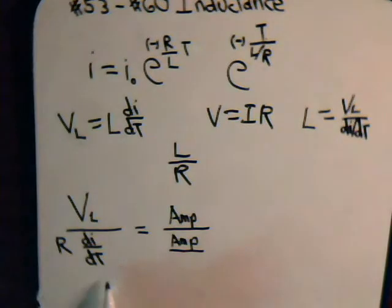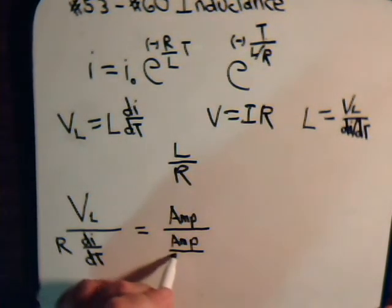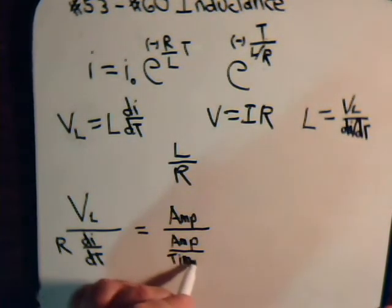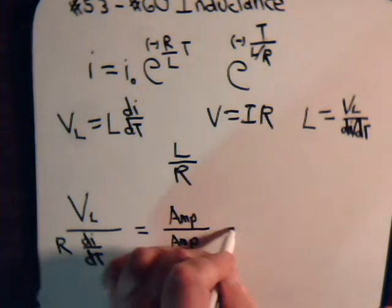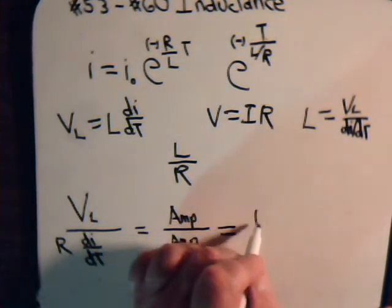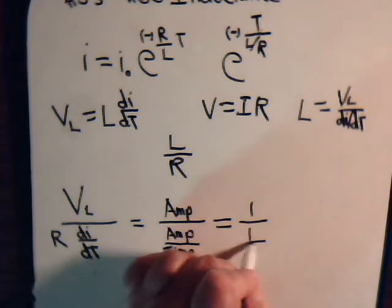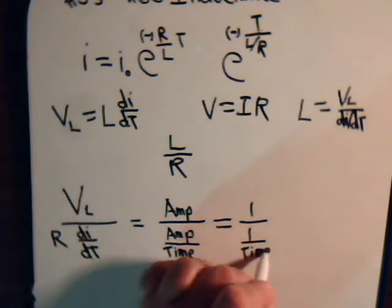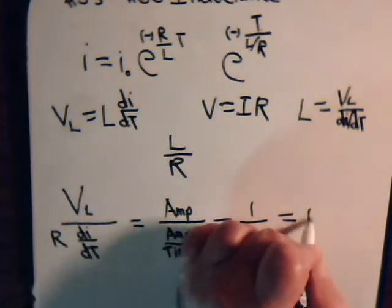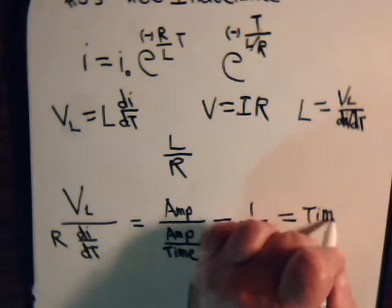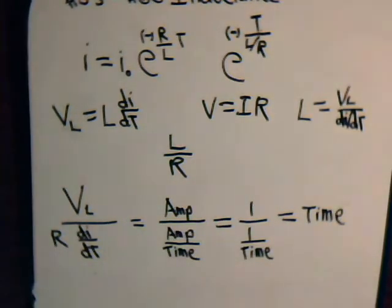And then we have dt. Again, that's a time differential. But again, we're dealing with time. So this equals one over time. So it gives us some unit of time. L divided by R.